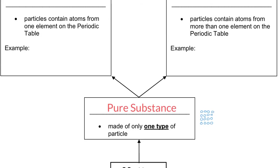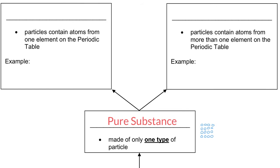Let's look at pure substances in more detail. A pure substance can be classified even further as either an element or a compound. An element contains atoms from one element on the periodic table. A compound has atoms from more than one element on the periodic table. Elements are the simplest forms of different kinds of matter. If you have more than one type of atom combined, that's a compound. If you just have a single type of atom, that's an element.